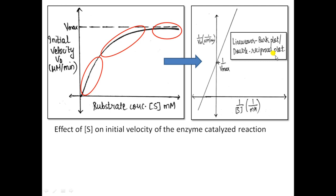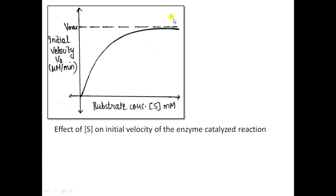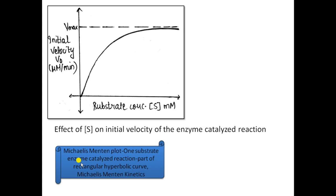In the Lineweaver-Burk plot you get a straight line which cuts both the y-axis and the x-axis. Where it cuts the y-axis is the y-intercept, which equals 1/Vmax — so you take the reciprocal of the y-intercept to get the value of Vmax. This plot of initial velocity versus substrate concentration is called the Michaelis-Menten plot for a one-substrate enzyme-catalyzed reaction, and its shape is part of a rectangular hyperbolic curve. All enzymes that give this same graph are said to follow Michaelis-Menten kinetics.